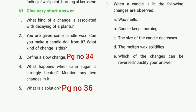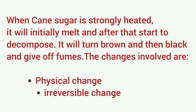Fourth question: what happens when cane sugar is strongly heated? Name any two changes involved. The answer is: when cane sugar is strongly heated, it will initially melt and after that start to decompose. It will turn brown and then black and gives off flames. The changes involved are physical change and irreversible change.